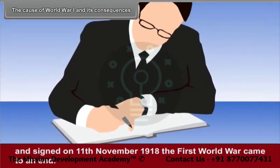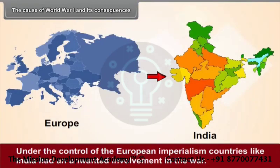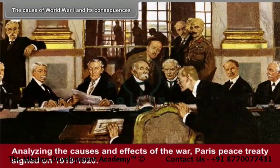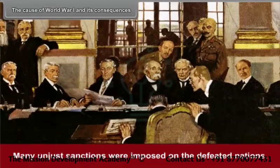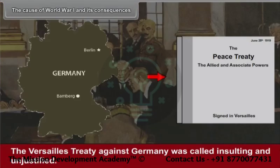The armistice was signed on 11th November 1918, and the First World War came to an end. Under European imperialism, countries like India had an unwanted involvement in the war. Analyzing the causes and effects of the war, the Paris Peace Treaty was signed in 1919–1920. Many unjust sanctions were imposed on the defeated nations. The Versailles treaty against Germany was called insulting and unjustified.